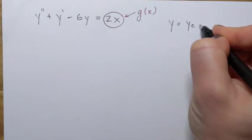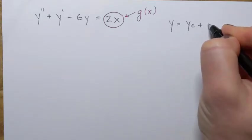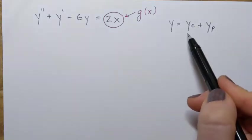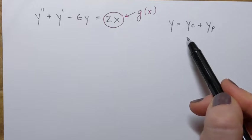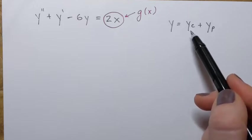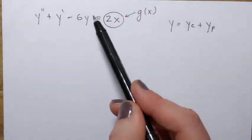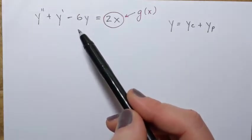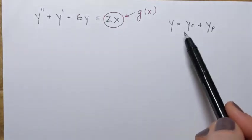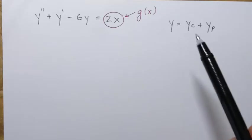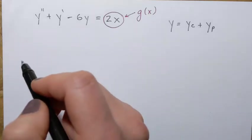The general solution of a non-homogeneous linear equation has the following form: y equals yc plus yp, where yc is the complementary function — it's also the general solution of the corresponding homogeneous equation. And that's what we're going to start with, so in step one we're going to find yc.